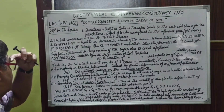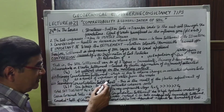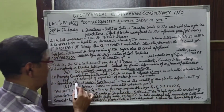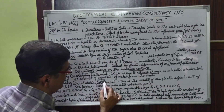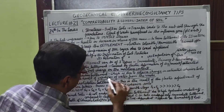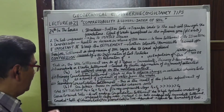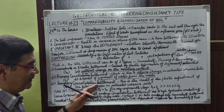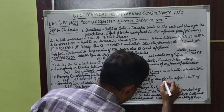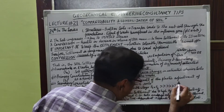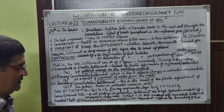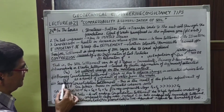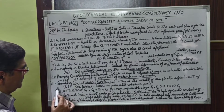Primary consolidation settlement occurs due to volume change in saturated cohesive soils as a result of expulsion of water from the voids. Secondary consolidation settlement is the result of plastic adjustment of soil fabrics, and this also occurs in saturated cohesive soils. Primary consolidation settlement is represented by Sc and secondary consolidation settlement by Ss.